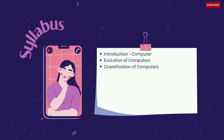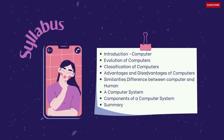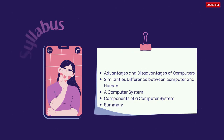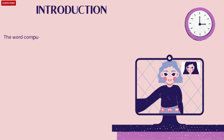Firstly, let's look at the syllabus to cover the topic: Introduction to Computer, Evolution of Computers, Classification of Computers, Advantages and Disadvantages of Computers, Similarities and Differences between Computer and Human, Computer System, Components of a Computer System, and Summary.